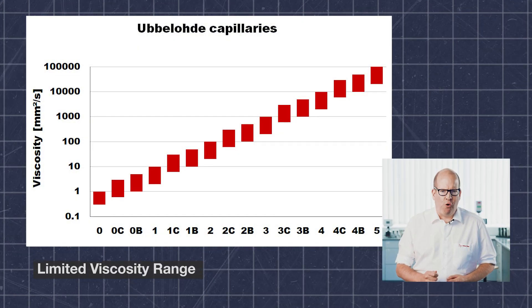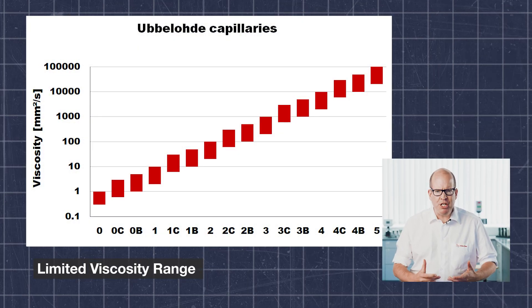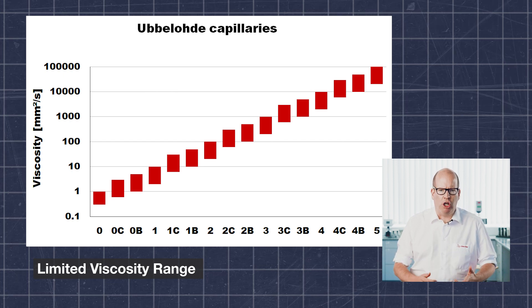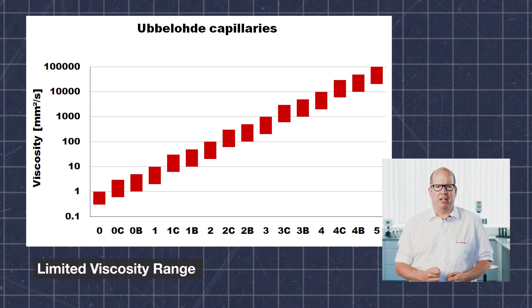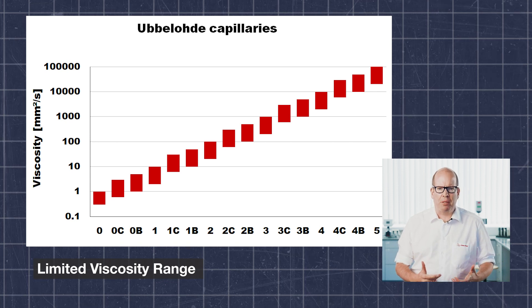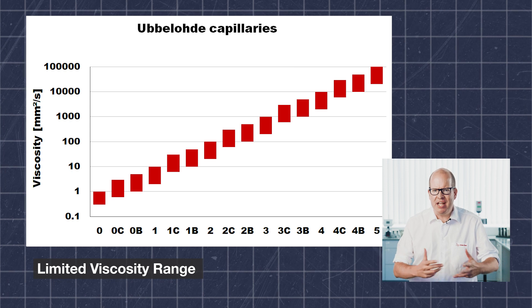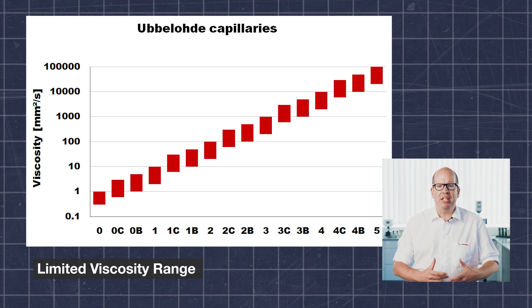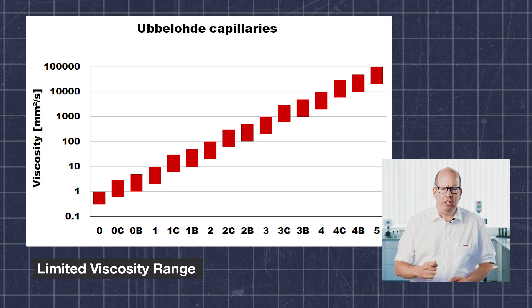But why was D7042 developed in the first place? D445 has a number of limitations related to the level of technology available at the time the method was created. As glass capillaries are matched to viscosity ranges, many capillaries are needed to measure a wide range, and samples need to be rerun if an incorrect capillary is selected. Each capillary also requires regular calibration and has to be tracked in the quality management system.